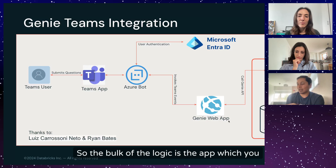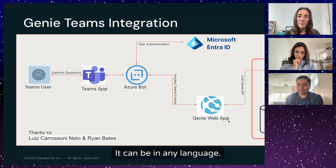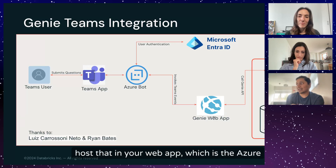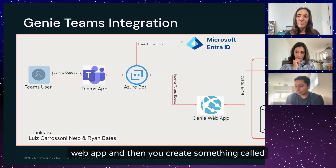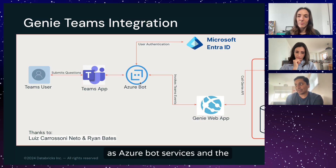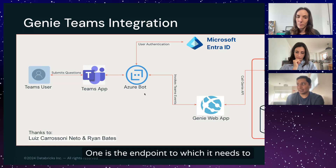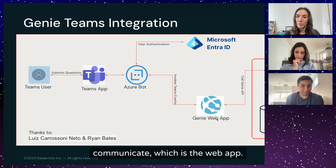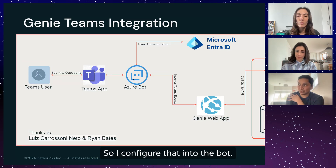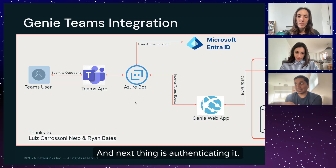The bulk of the logic is the app which you create. It can be in any language; I have chosen Python. You host that in an Azure web app. Then you create something called an Azure Bot — an Azure resource called Azure Bot Services. It needs two inputs: one is the endpoint to which it communicates, which is the Genie web app, and the web app has an endpoint configured into the bot.